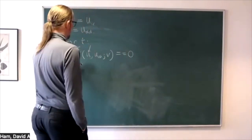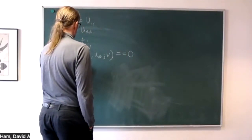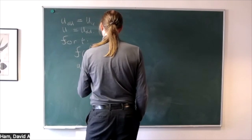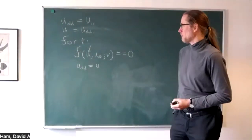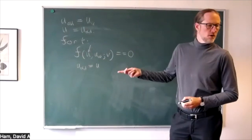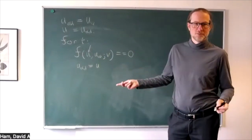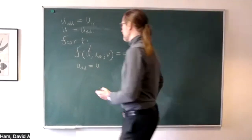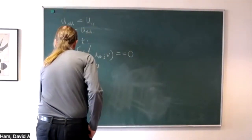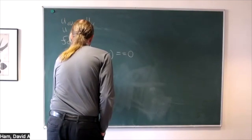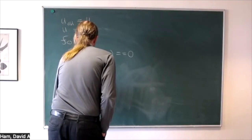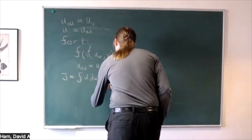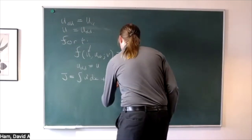After I've done that, I update u_old, and then we go around again. Eventually we're done, and then I compute some sort of functional. A really simple but not completely unrealistic functional would be the square of the solution at the end of time, plus the square of the initial conditions.